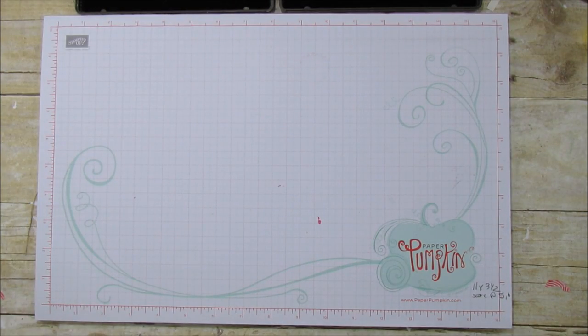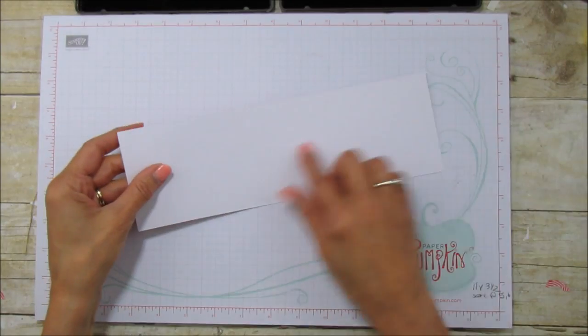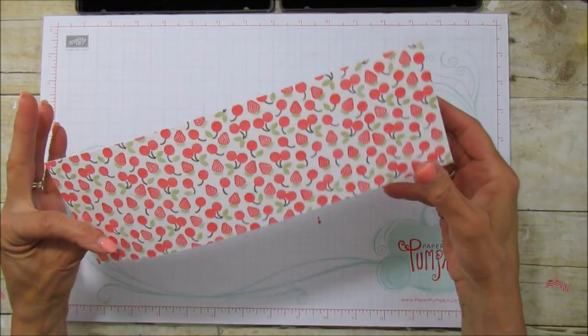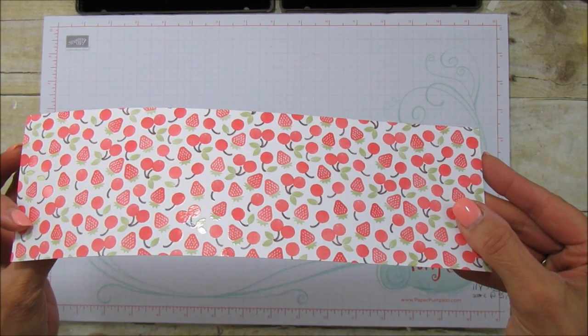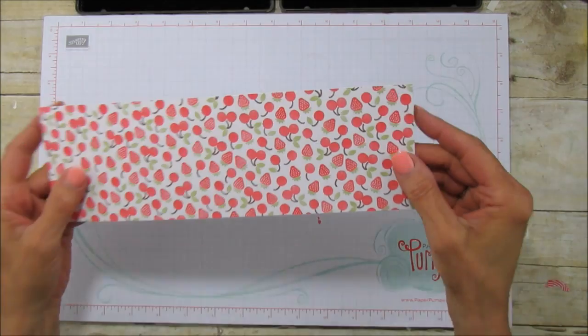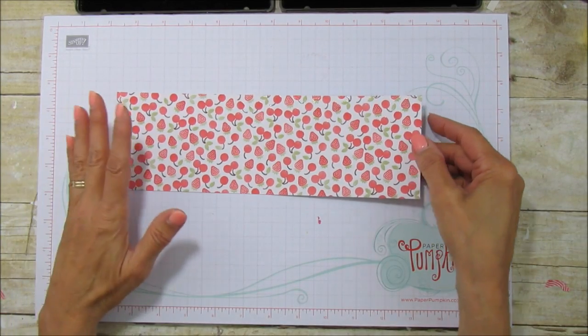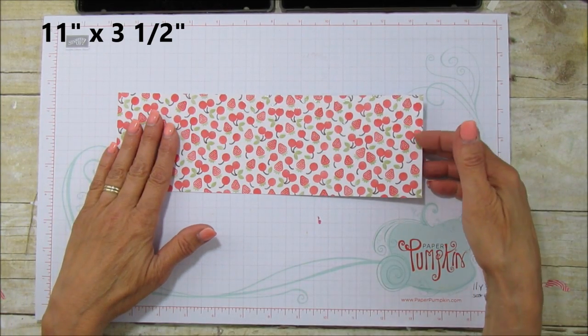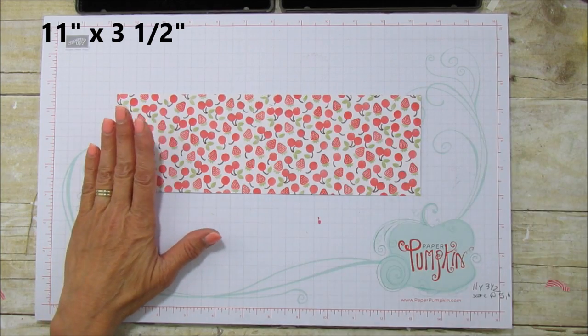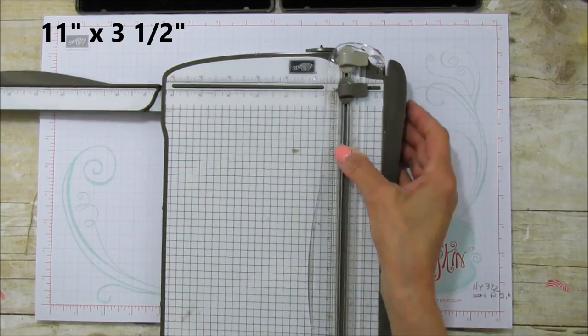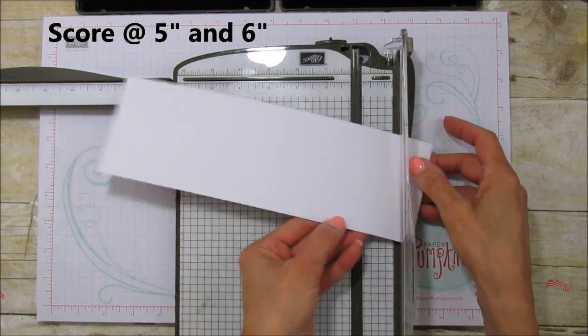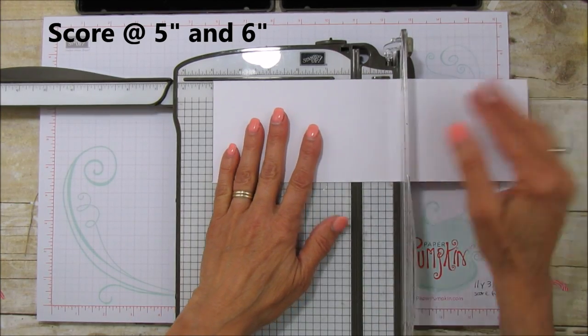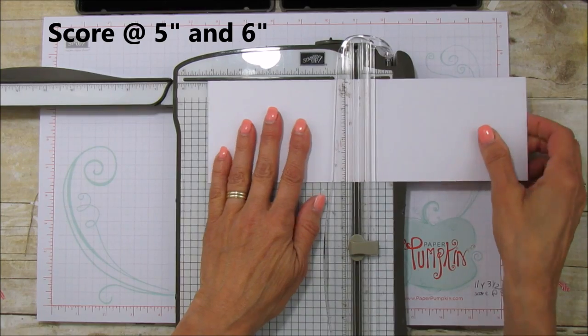So what I am going to use is, this is single, it's not double sided because it is specialty paper. You can see the glare right there if you can see that. So pretty. But anyway this piece is 11 by three and a half and let me grab the scoring tool here and we're going to score it at five and six. So I am just going to score it at five and then at six.